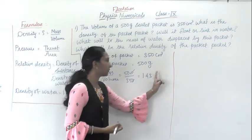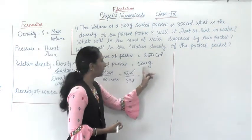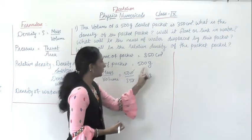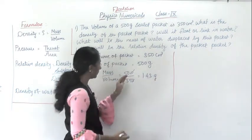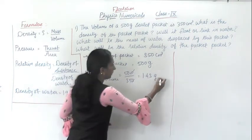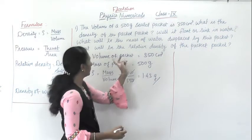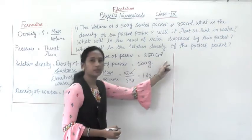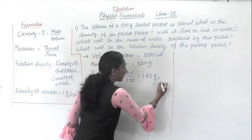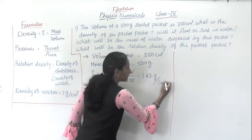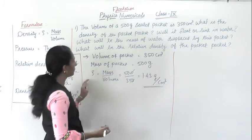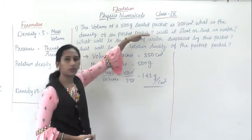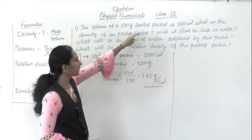The unit of density here: mass unit is gram, and volume unit is centimeter cube. So the density is 1.43 gram per centimeter cube. So we have solved the first part.